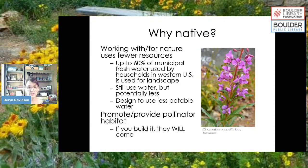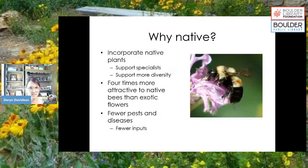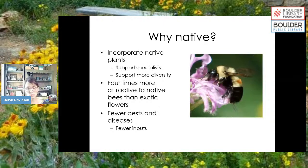Another big benefit is that native plants promote and provide pollinator habitat. One of the biggest threats that pollinators face right now is habitat loss. If you build it, they will come. Incorporating native plants will support not only specialist insects — some bees that only pollinate plants in a specific family — but also more diversity in pollinators overall.